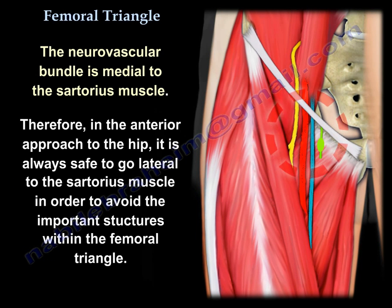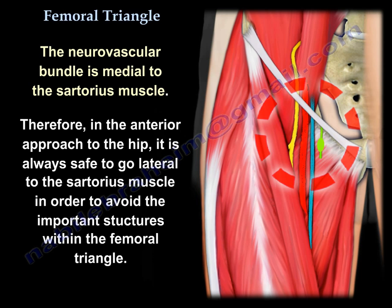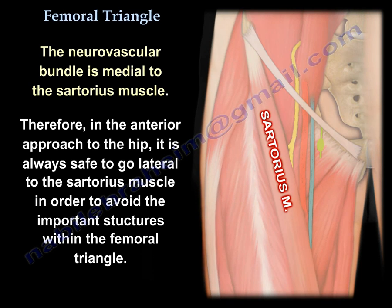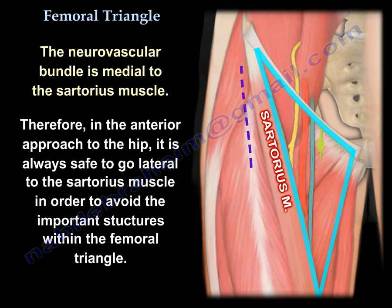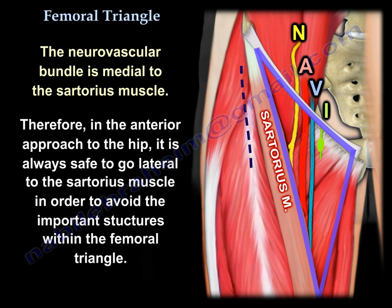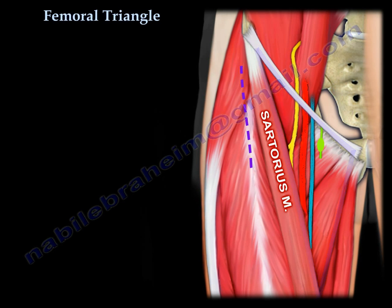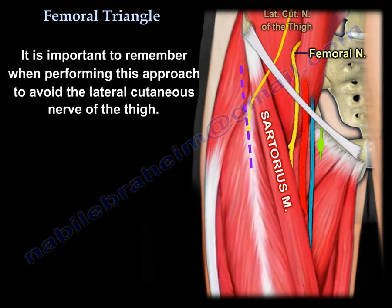The neurovascular bundle in the femoral triangle is located medial to the sartorius muscle. Therefore, when performing the anterior approach of the hip, it is always safe to go lateral to the sartorius muscle in order to avoid the important structures within the femoral triangle. It is also important to remember to avoid the lateral cutaneous nerve of the thigh when performing this approach.